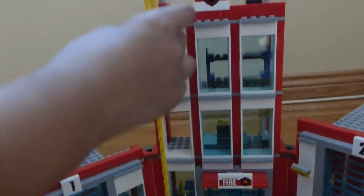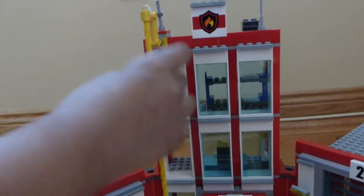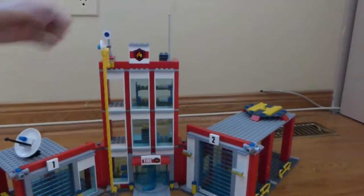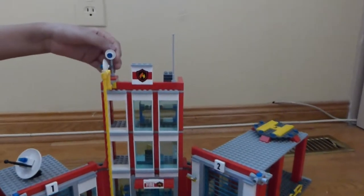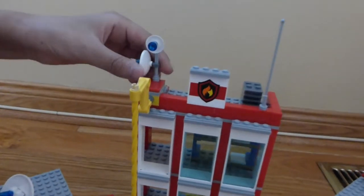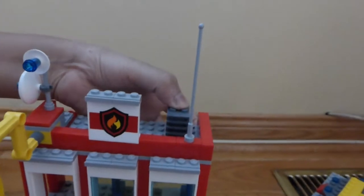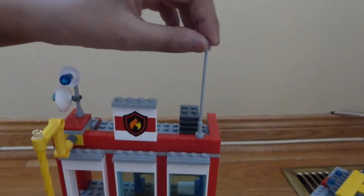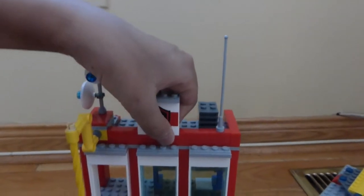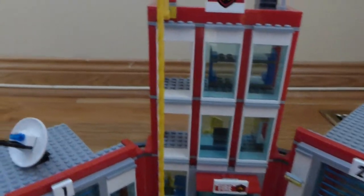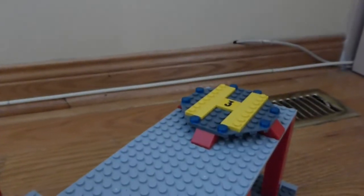We have the fire pole which actually works. We've got some satellite dishes on the top and an air conditioner vent or whatever you like to think it is, an antenna and the fire sign. There's also a helicopter pad on the back of the second garage.